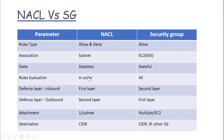In NACLs, all the rules are processed in order. But in security groups, all the rules are evaluated before any traffic is allowed or denied.